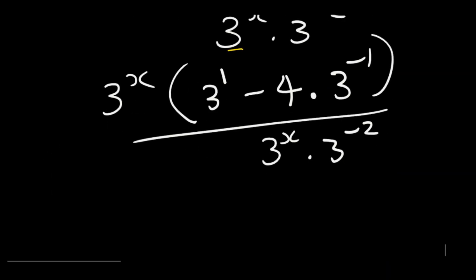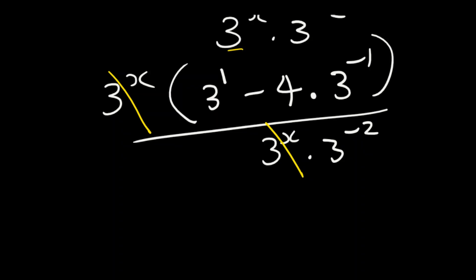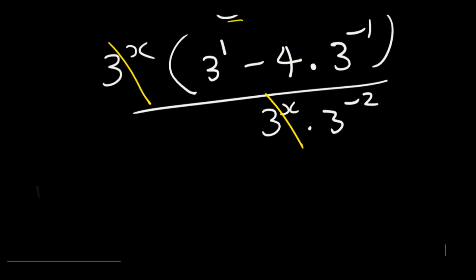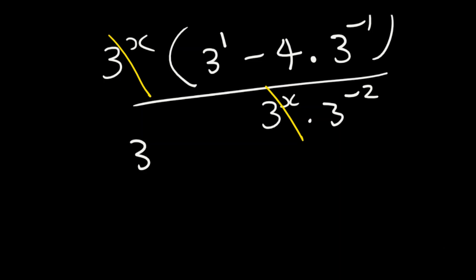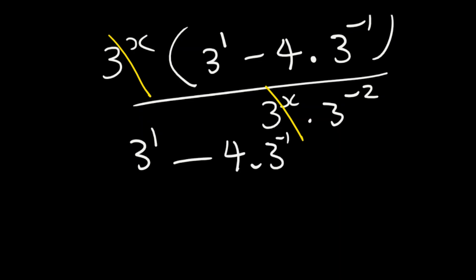We are factorizing because the same base appears at the bottom too, so that we'll be able to divide them out. From here what you will have is 3 to the power of 1, minus 4 multiplied by 3 to the power of minus 1, divided by 3 to the power of minus 2.